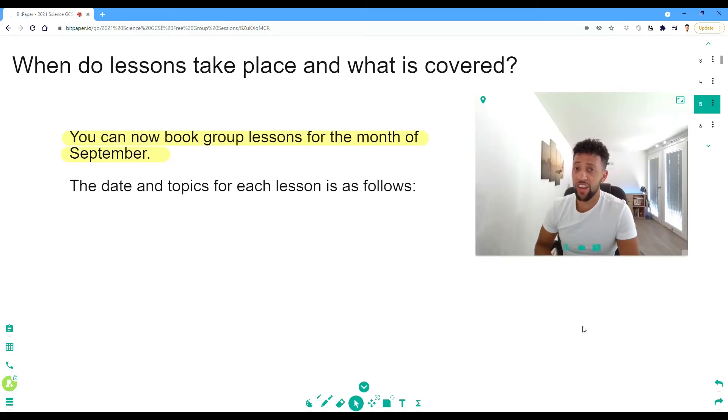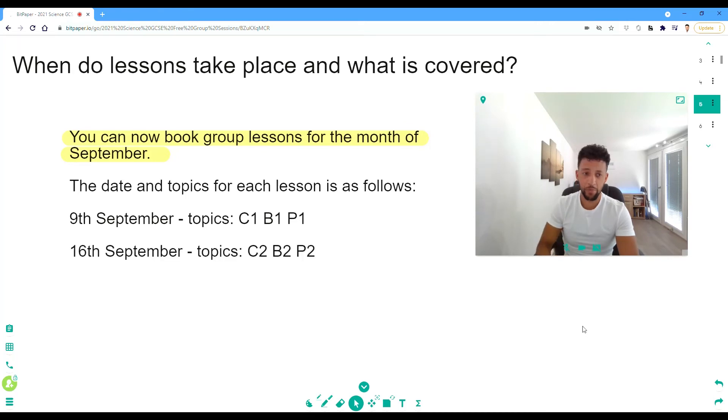The dates and topics for each lesson are as follows. On September 9th, the topics will be Chemistry 1, Biology 1, and Physics 1, each divided into half-hour sections. The following Thursday, September 16th, you'll be covering C2, B2, and P2. This will continue on the 23rd and 30th through to the end of the month.